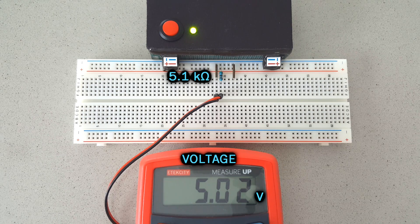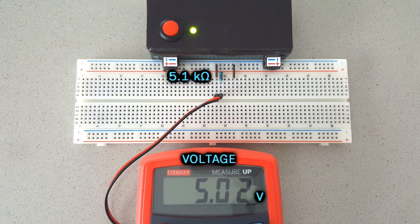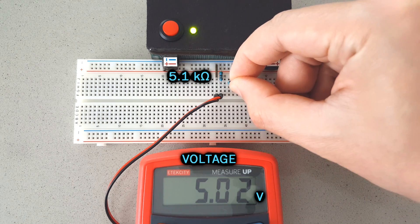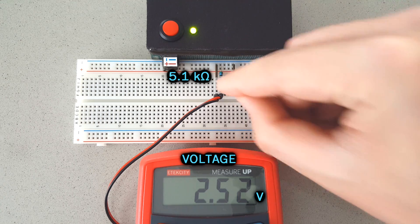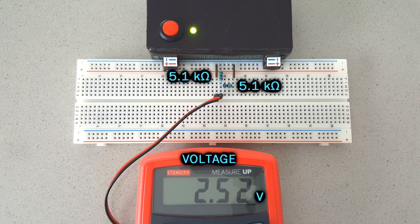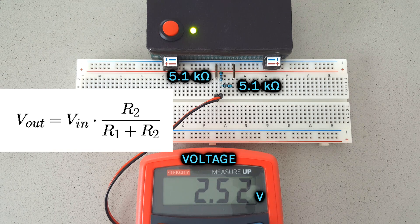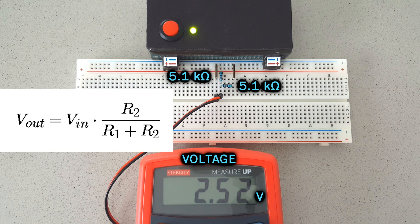By limiting the current, resistors can drop the voltage when they have a load, so we can use two or more resistors to create what is called a voltage divider. Depending on the value of the resistors, you can drop the voltage to any value that you want.